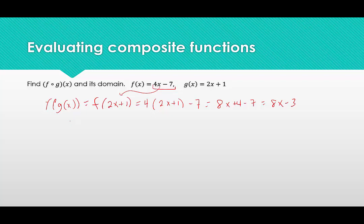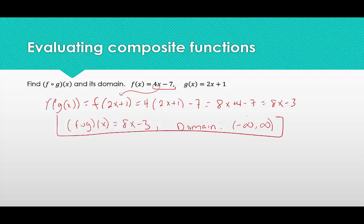So the composite function f of g of x equals 8x - 3. The domain — everything here is linear, both the given functions and the composite function — so there are no restrictions. The domain is from negative infinity to infinity.